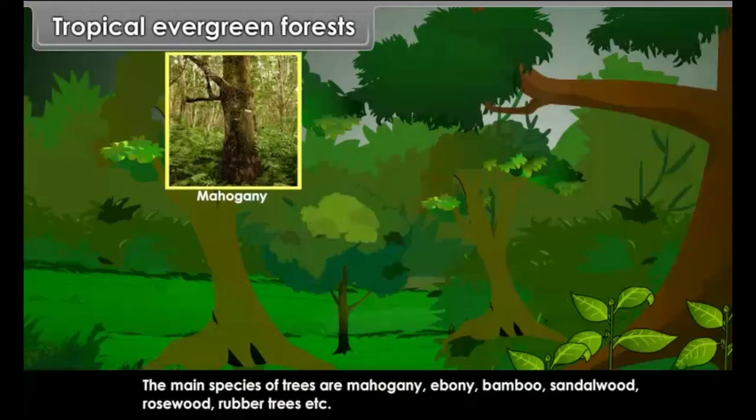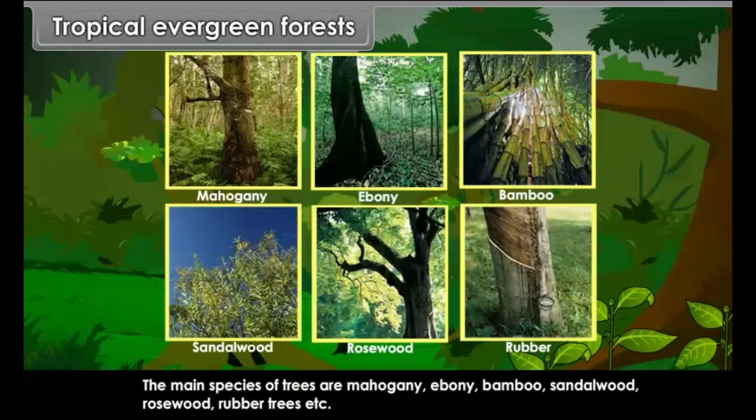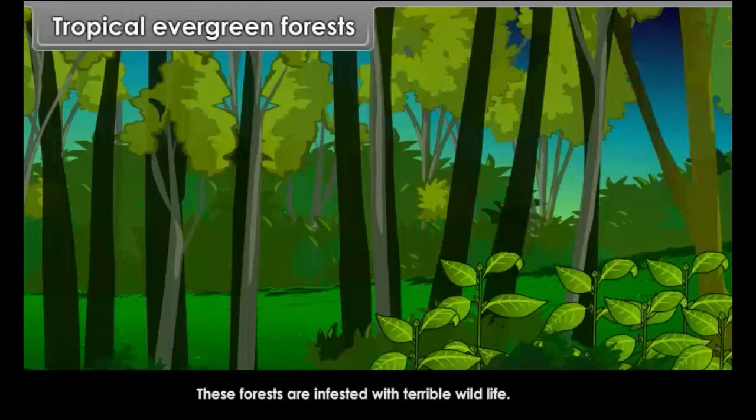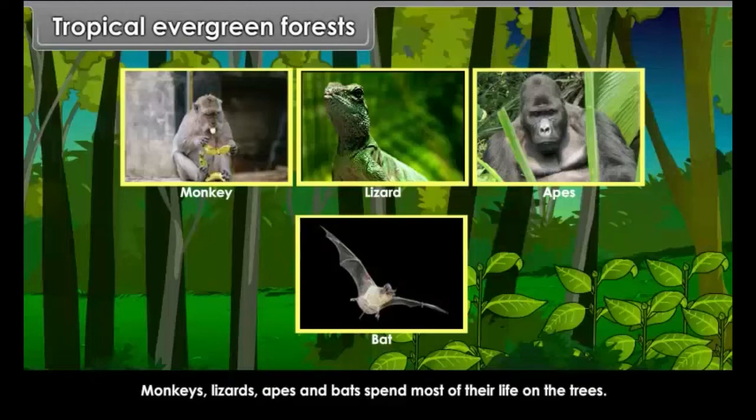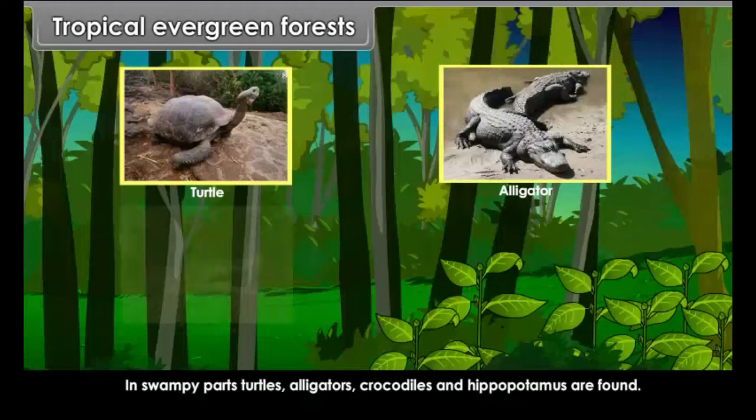These forests are infested with terrible wildlife. Monkeys, lizards, apes and bats spend most of their life on the trees. In swampy parts, turtles, alligators, crocodiles and hippopotamus are found. Jaguars, leopards, pythons and elephants are other native animals of these forest lands.